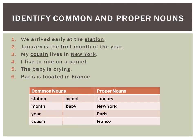Let us try to identify common and proper nouns. 'We arrived early at the station' — the word station here is a common noun. 'January is the first month of the year' — the word January is a specific name, therefore it is a proper noun, whereas month and year are common nouns. 'My cousin lives in New York' — since the cousin's specific name is not given, cousin is a common noun and New York is a proper noun.